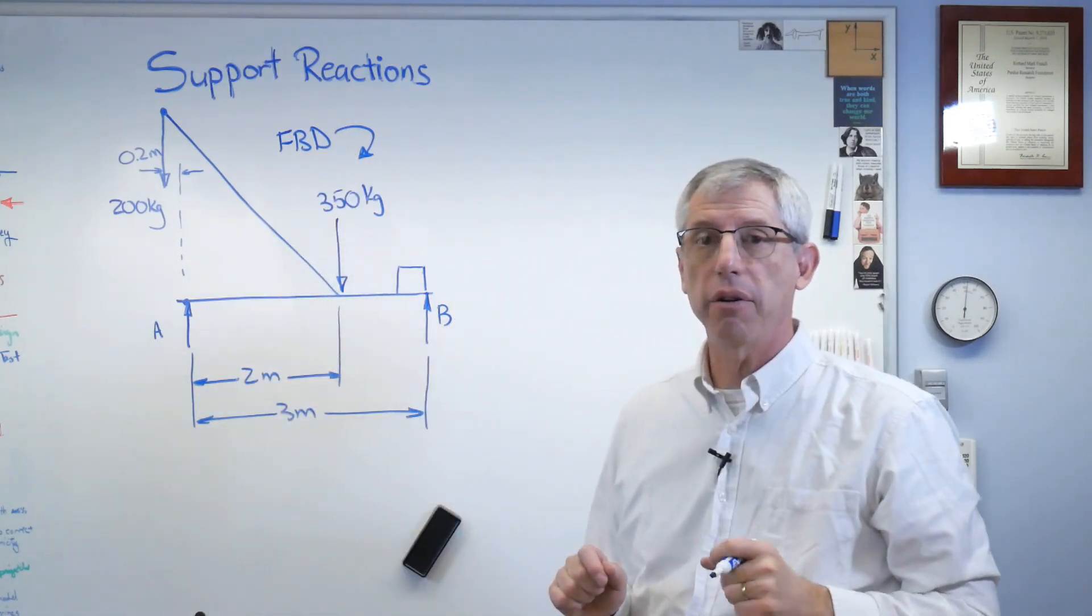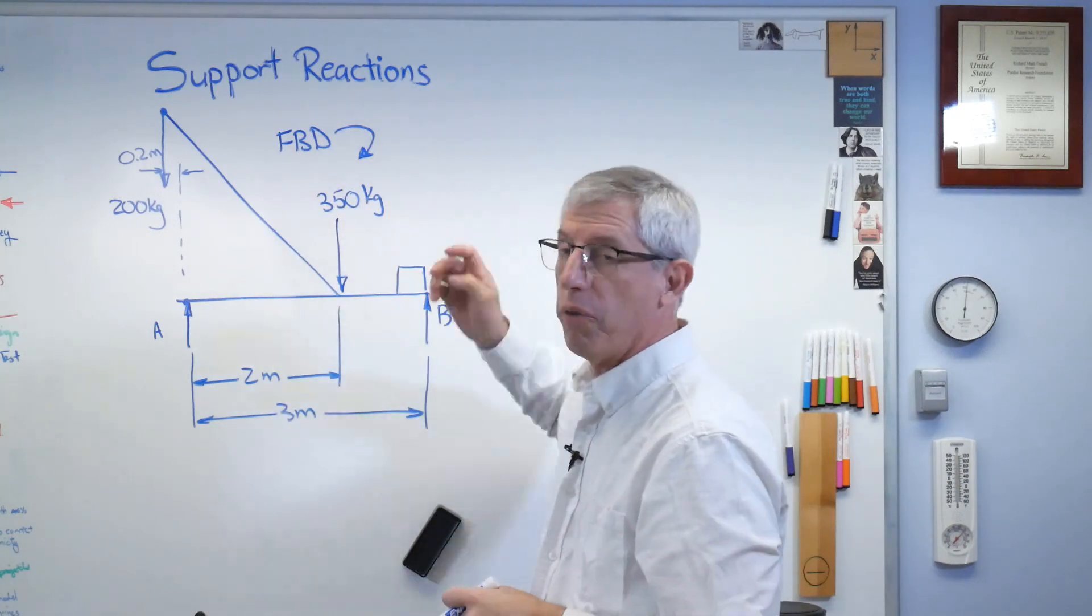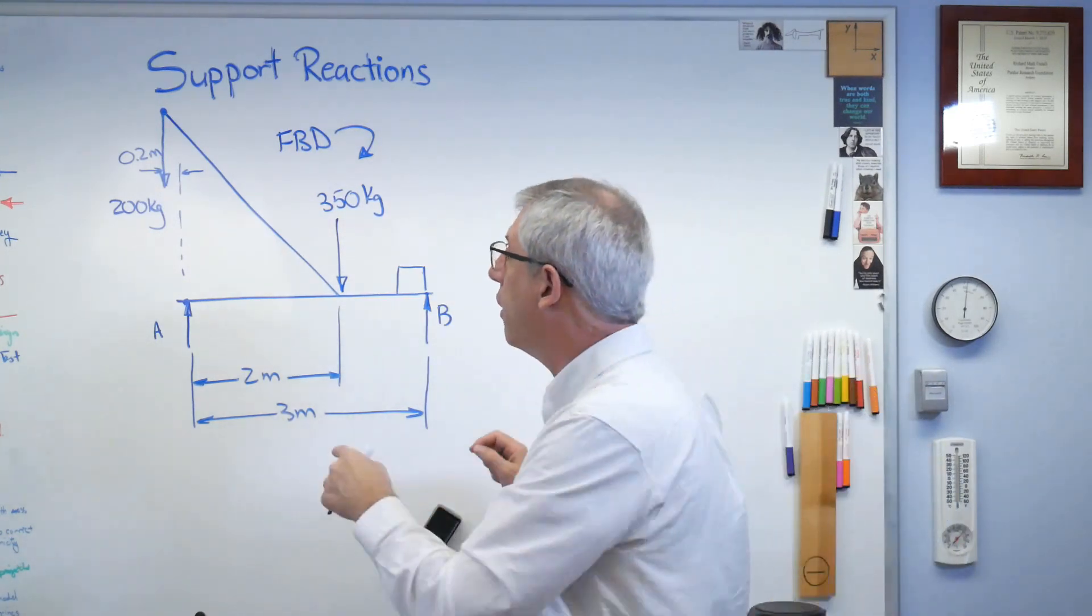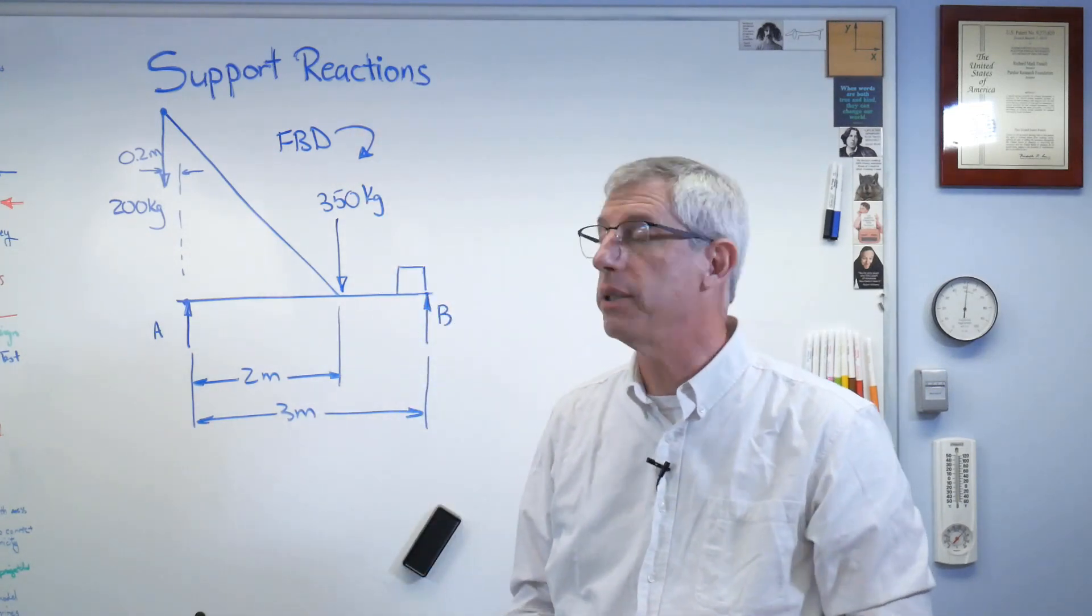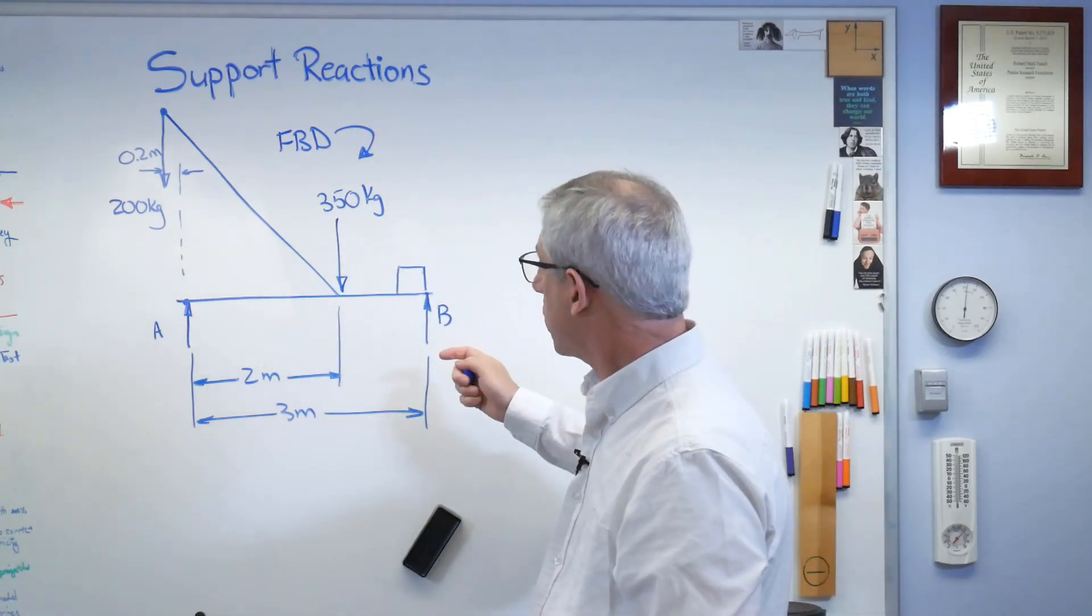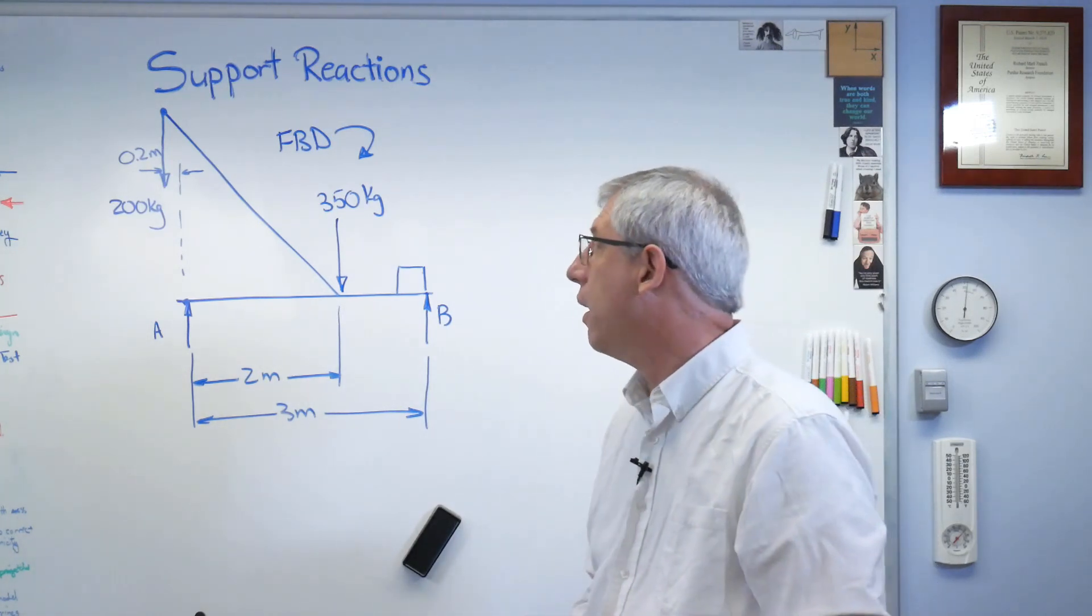Now, this really is a free body diagram. In free body diagram, the word we care about here is free. It's now freed from its supports. And the only way it knows the supports are there is because of this force and this force. Those are called the support reactions, right? So all we got to do now is run through a basic statics problem to figure out what those are.